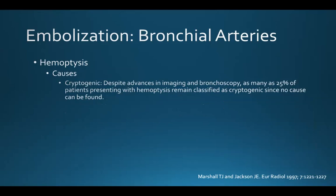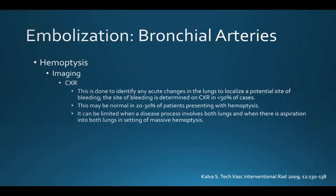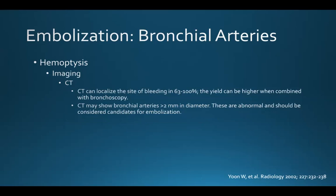As many as 25% of patients presenting with hemoptysis are considered cryptogenic because no cause can be found. These patients are first usually evaluated with imaging, and a chest x-ray is often done to identify any acute changes in the lungs to localize a potential site of bleeding. But the site of bleeding is determined on chest x-ray in less than 50% of cases, and it may be normal in 20% to 30% of patients presenting with hemoptysis. It can be especially limited when a disease process involves both lungs or where there's aspiration of blood into both lungs in the setting of massive hemoptysis.